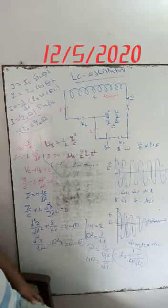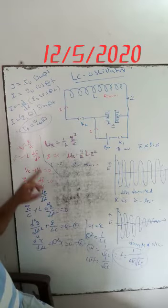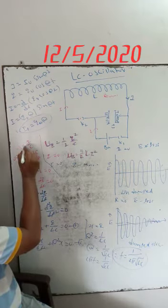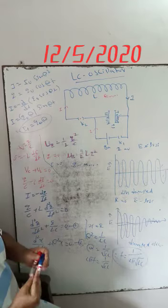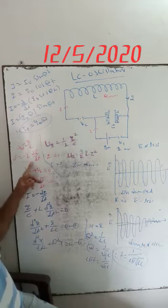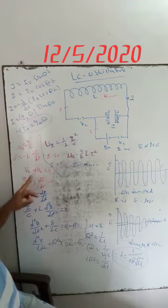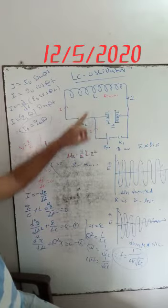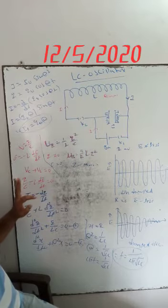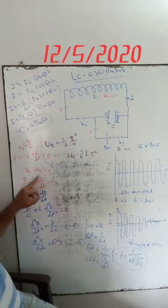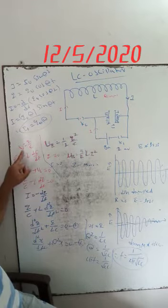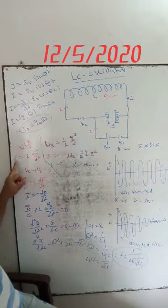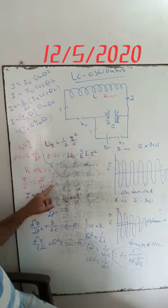The potential difference across the capacitor is V equal to Q divided by C. The induced EMF in the inductance coil is epsilon equal to minus L into dI upon dt. The sum of the potential difference across the capacitor and the potential difference across the inductance coil equals zero: Vc plus VL equal to zero. So Q divided by C minus L into dI upon dt equals zero.